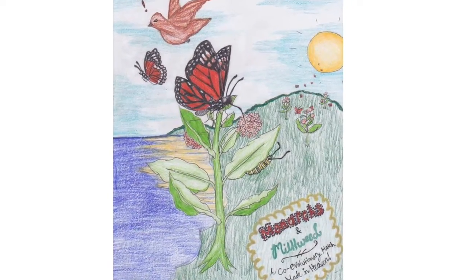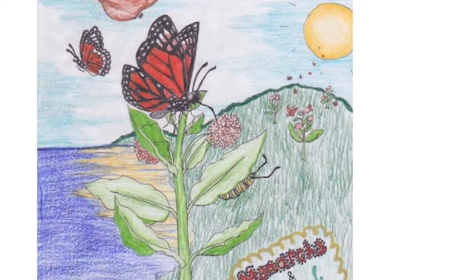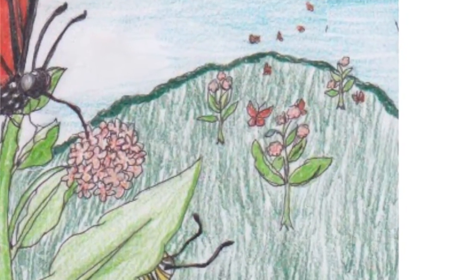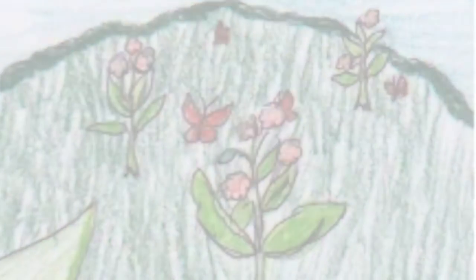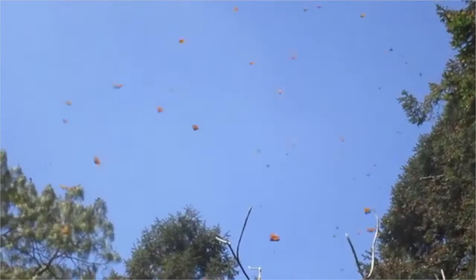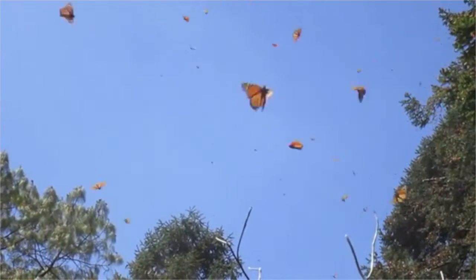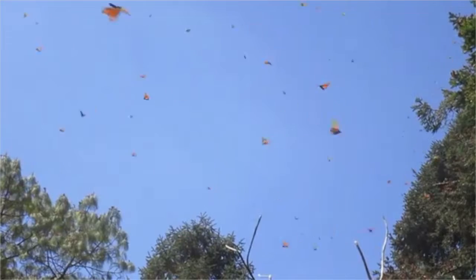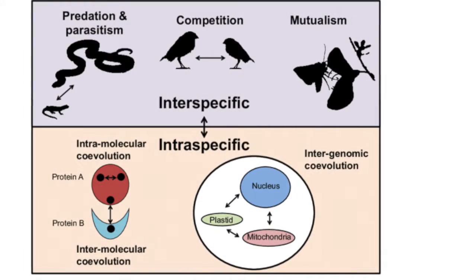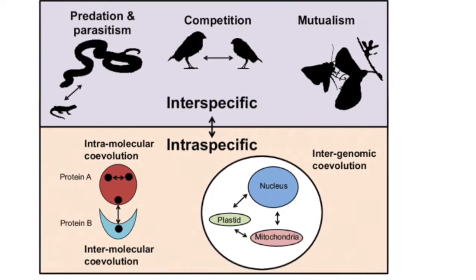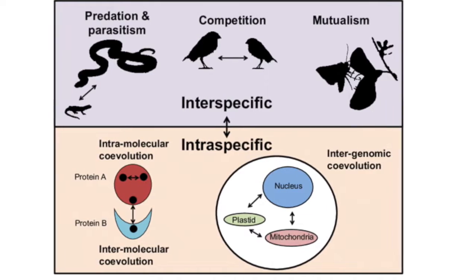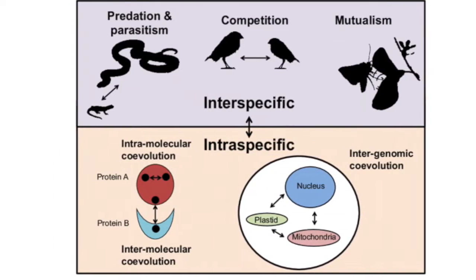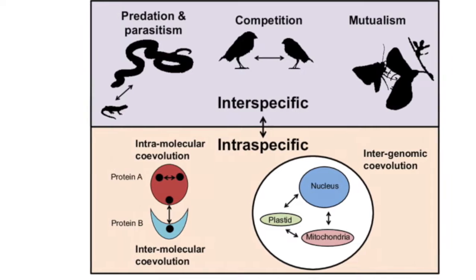Finally, we will show how the growth habits of milkweed have been influenced by monarch migration, a process that has been determined by milkweed growth patterns in the first place. All of these lessons shed light on not only the distinct and complex co-evolutionary relationships between milkweed and monarchs, but also the many ways in which life forms of different origin have shaped the course of one another's evolution, whether that be through predation, adaptation, or defense.